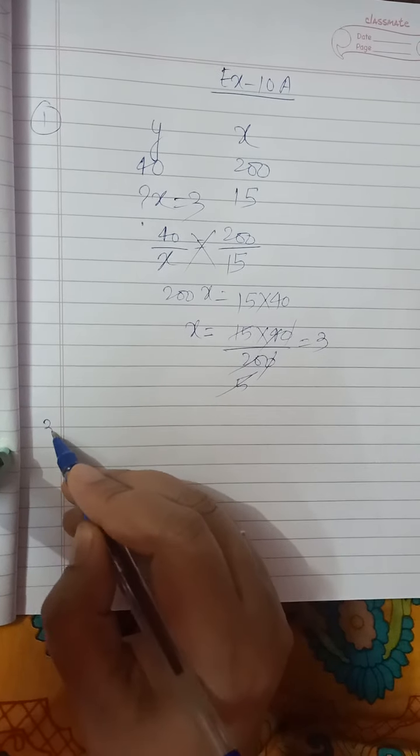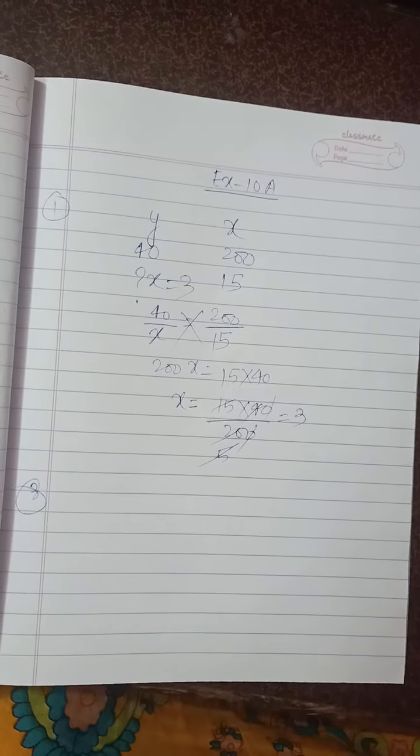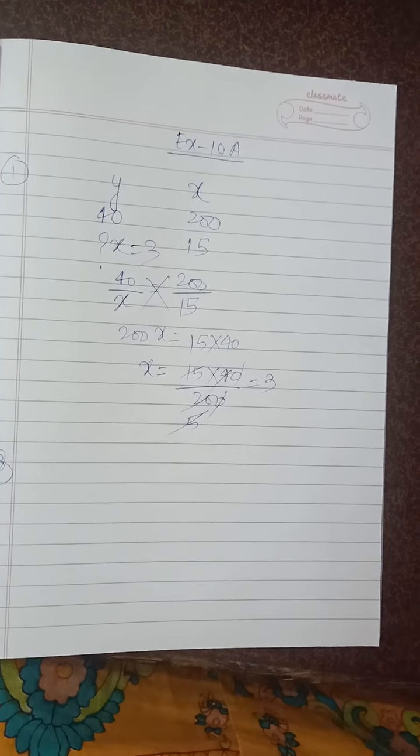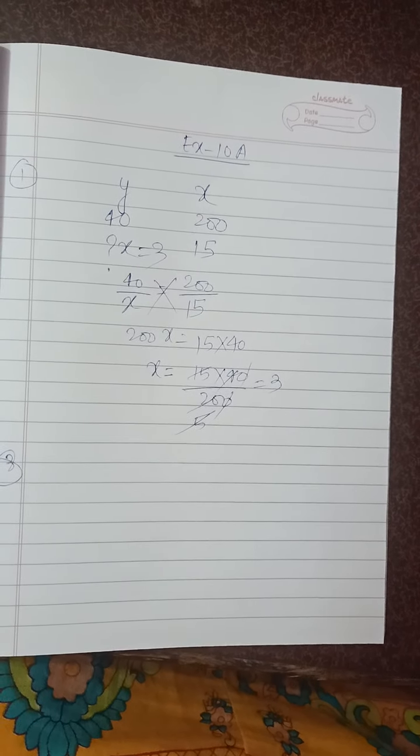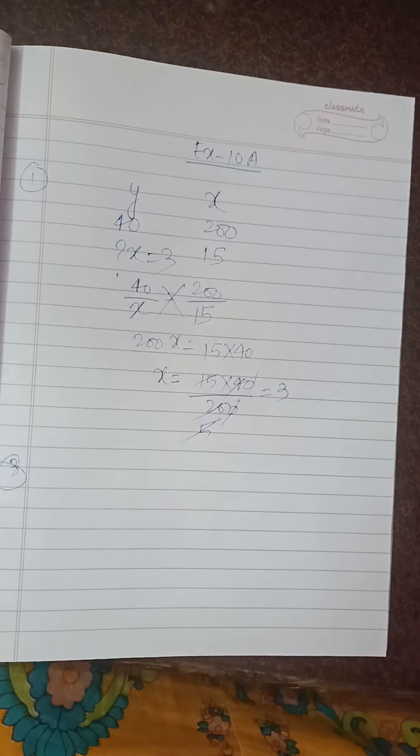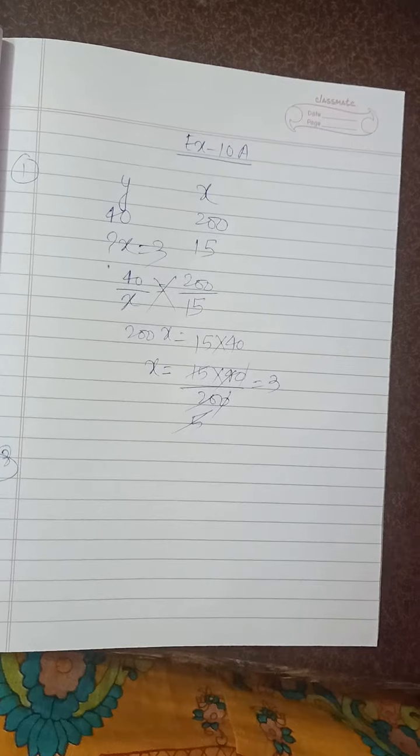Next we have question number 3. In the third question, Priya takes 4 hours in walking a distance of 20 km. What distance would she cover in 7 hours?